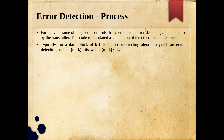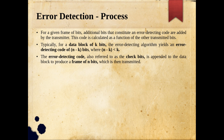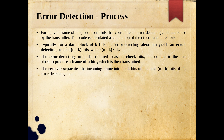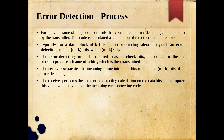For a data block of k bits the error detecting algorithm yields an error detecting code of n minus k bits, where n minus k is always less than k. We try to keep the overhead bits as small as possible because these check bits are not conveying actual information — they are added only for error detection. The n minus k check bits are appended to the end of the block to produce a frame of n bits, which is then transmitted.